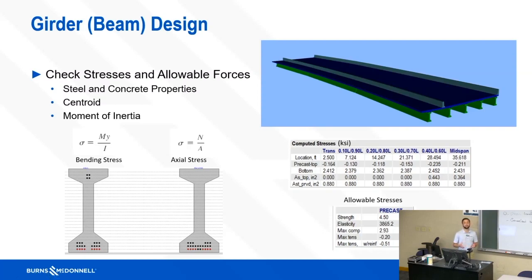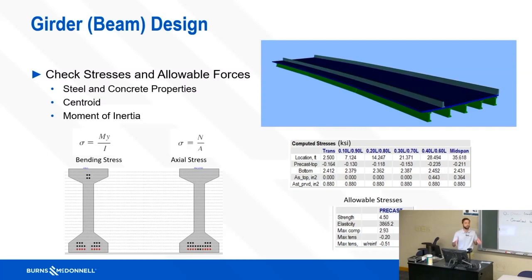For a prestressed concrete beam, you calculate bending stresses using sigma equals My over I with composite properties, but you also have an axial stress — so it's a combined loading scenario. The strands shown in the prestressed girder are pulled at a concrete plant while pouring, leaving thousands of pounds of stress in the steel strands. When they're cut, it causes compression in the member. This is done because concrete is weak in tension but strong in compression, so the pre-existing compression counteracts the tensile stresses from bending.